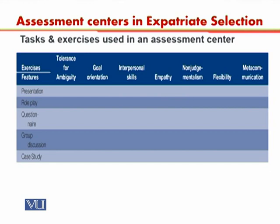In this chart, you can see the tasks and exercises used in an assessment center. The types of exercises include presentation, role play, questionnaire — where the person fills out something being assessed — group discussion, and case study, where a case is given to analyze so that the person's ability to evaluate different situations can be assessed. This is not an exhaustive list; there may be other elements of exercises done in an assessment center.